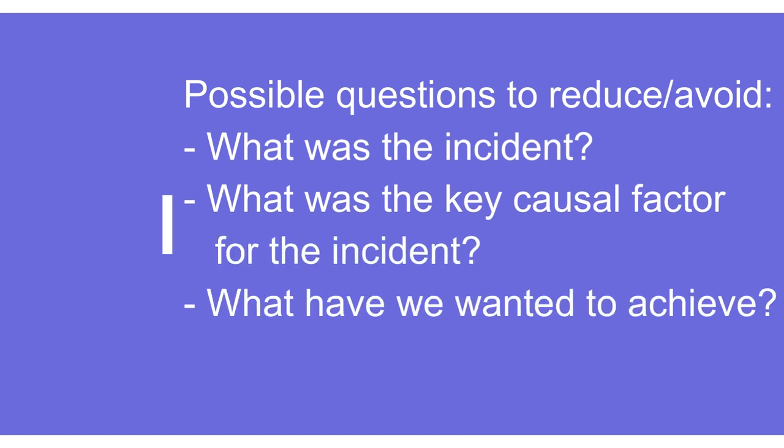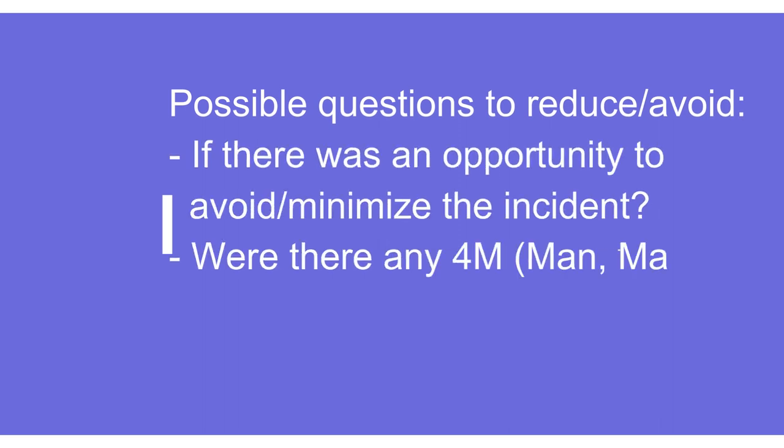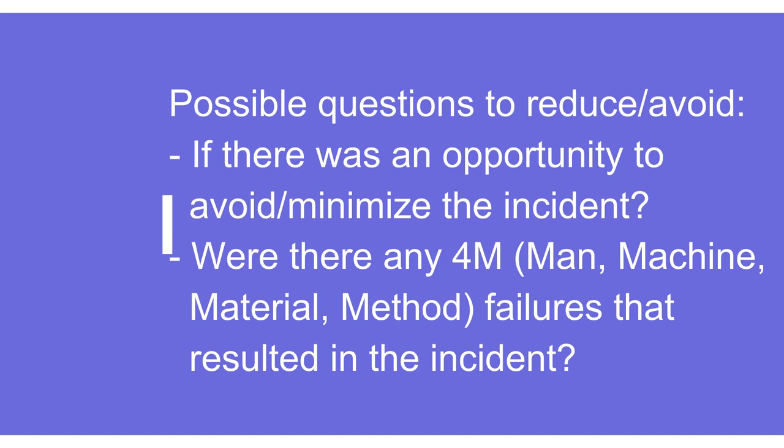To minimize such events, we can ask key questions. First: what was the incident? Second: what was the key causal factor — in our case, the bad road condition. Third: what did we want to achieve? We wanted on-time delivery. Fourth: was there any opportunity to avoid or minimize the incident? Yes — we could have waited for the traffic jam to clear instead of taking the alternate route. Fifth: was there any man, machine, material, or method failure? In this case it was a method — an unapproved alternate route — that was followed.